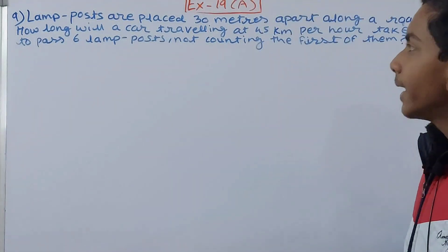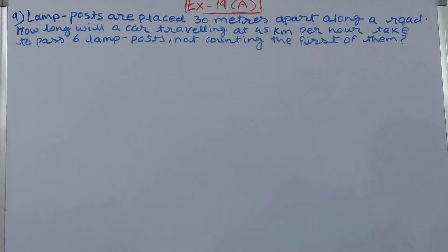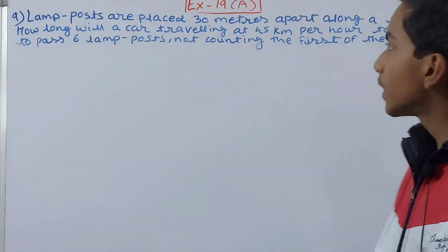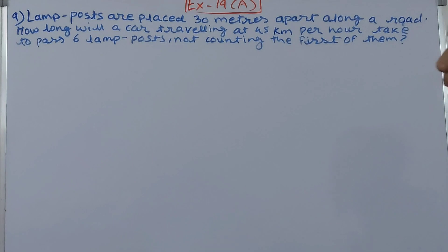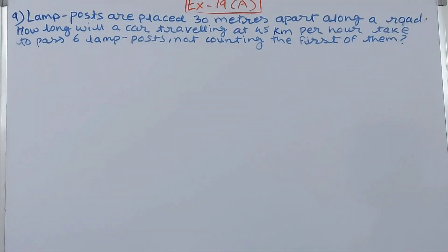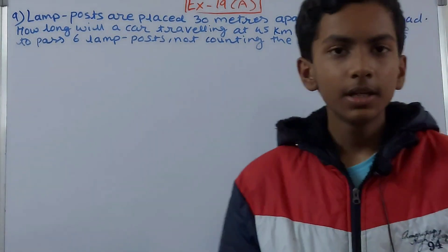The question is: lamp posts are placed 30 meters apart along a road. How long will a car traveling at 45 kilometers per hour take to pass 6 lamp posts, not counting the first of them?